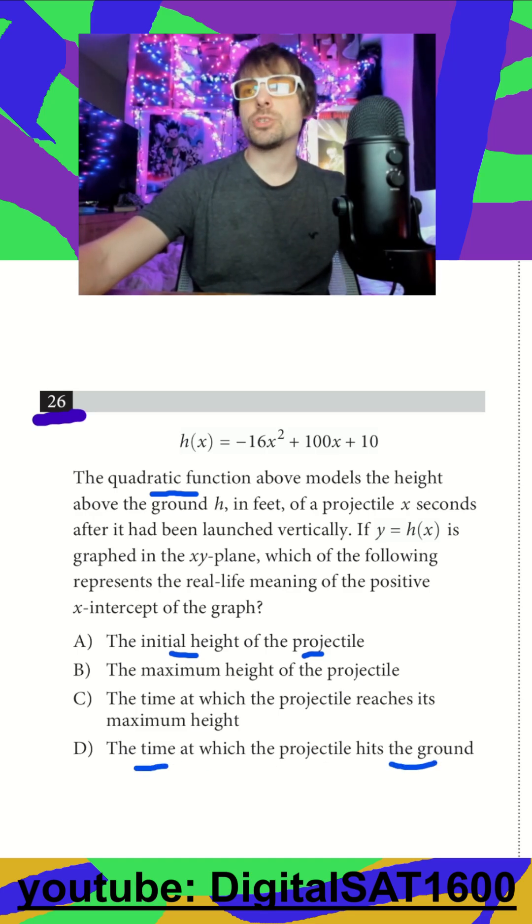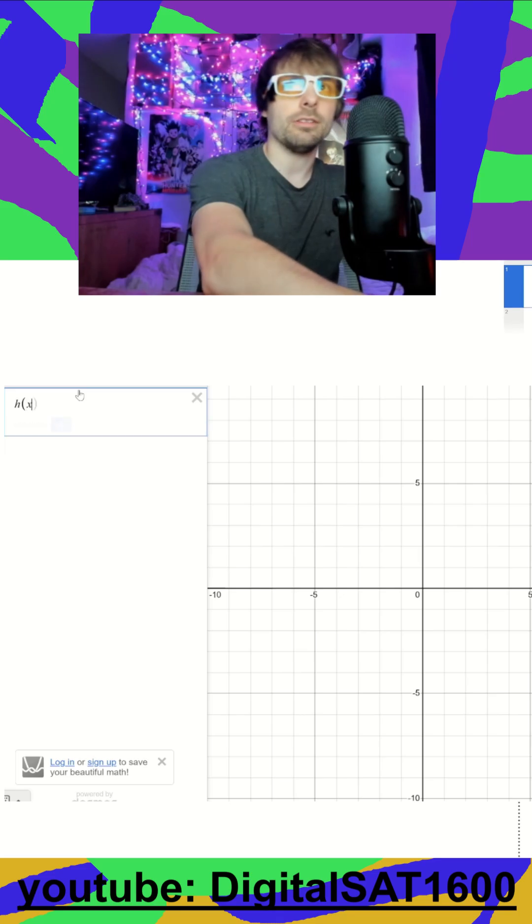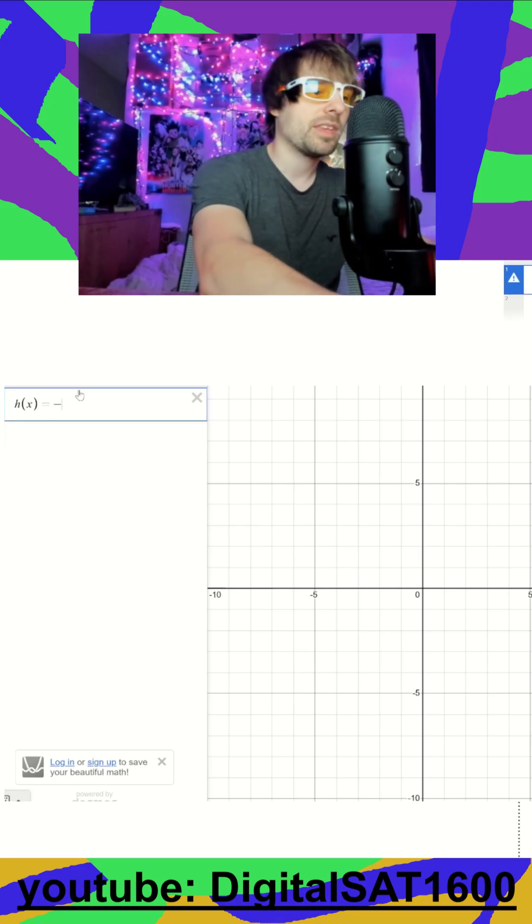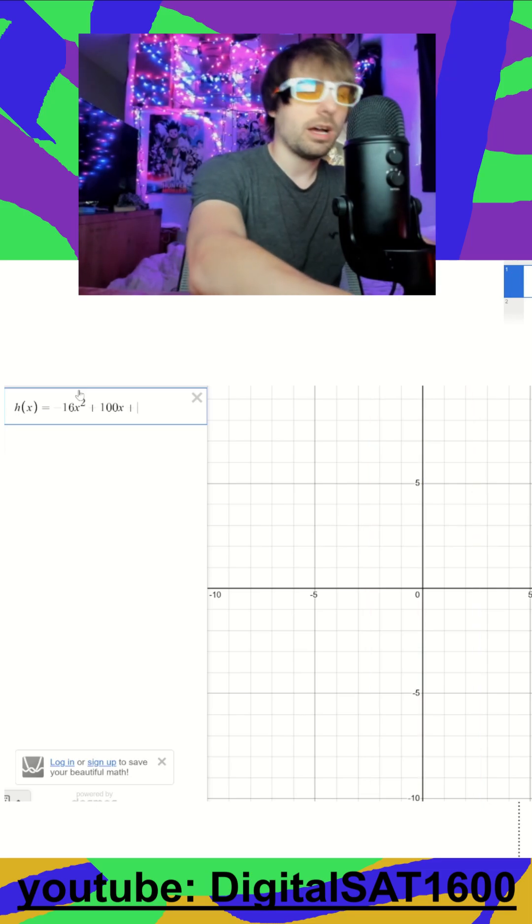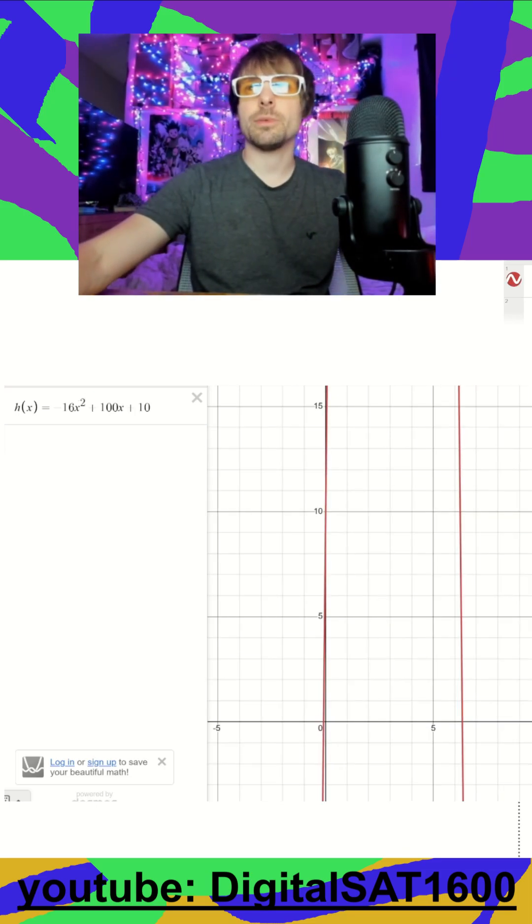The easiest way to visualize this is we can throw it in Desmos and look for our important points. So I see that this is going to be a parabola with a couple distinct points I want to look at here.